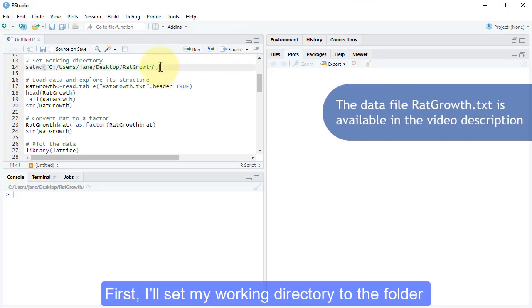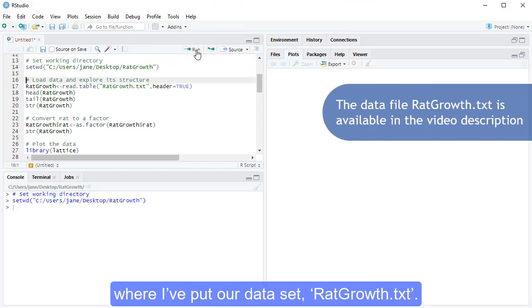First, I'll set my working directory to the folder where I put our dataset, ratgrowth.txt.